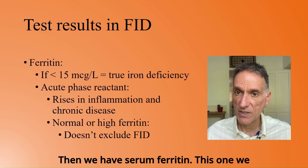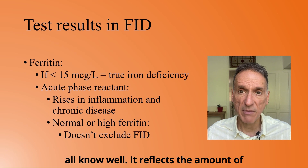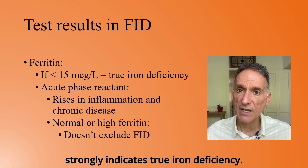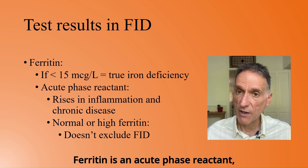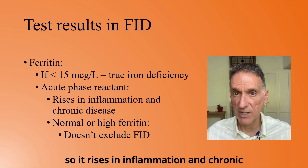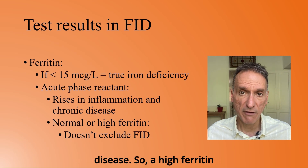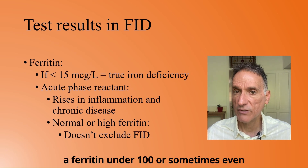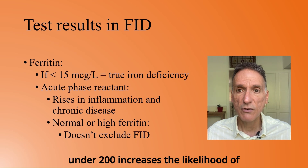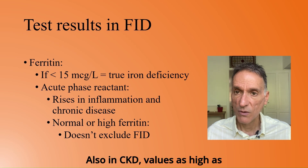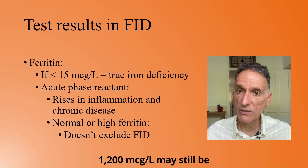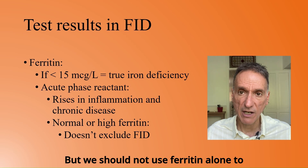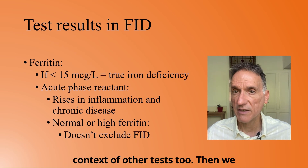Then we have serum ferritin. It reflects the amount of stored iron in the body. If it's under 15 micrograms per litre, that strongly indicates true iron deficiency. Ferritin is an acute phase reactant, so it rises in inflammation and chronic disease, meaning a high ferritin doesn't exclude functional iron deficiency. In CKD patients, a ferritin under 100, or sometimes even under 200, increases the likelihood of requiring further iron treatment. Also in CKD, values as high as 1200 may still be consistent with iron-restricted anemia. But we should not use ferritin alone to guide treatment, but consider it in the context of other tests too.